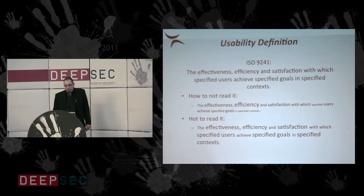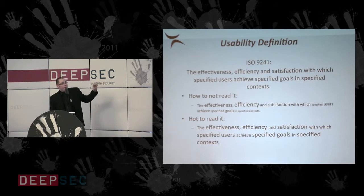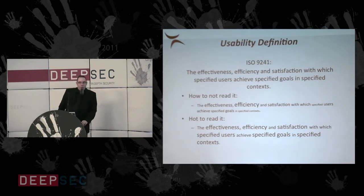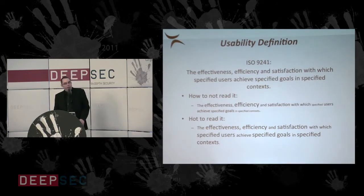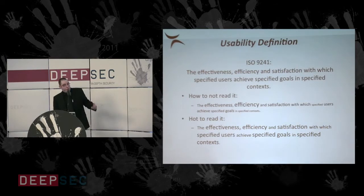Sadly enough, most people read that standard with one emphasis: efficiency. I tried to illustrate with font size how people emphasize efficiency over most other usability principles. Especially developers who live in a classical program-compile-test-re-engineer cycle tend to maximize efficiency over all other aspects because it makes their development work easier. This is one danger, because we will see that we have many principles and it's not always best to maximize just this one.